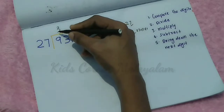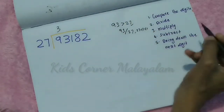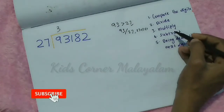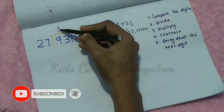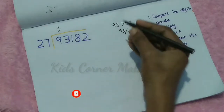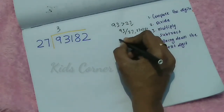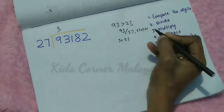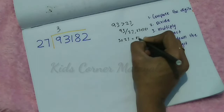The third step is multiply. The first quotient digit is 3. We multiply 3 into 27. So we already have here 81.